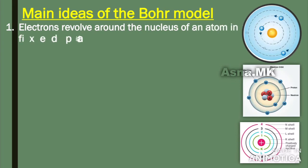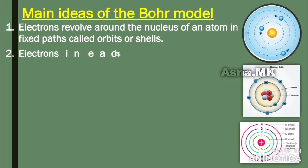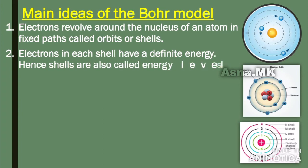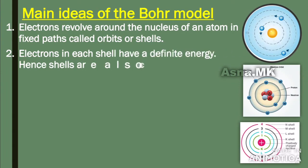First idea: electrons revolve around the nucleus of an atom in a fixed path called orbits or shells. The electrons revolve around the nucleus in a fixed orbit. The electrons in each shell have definite energy.